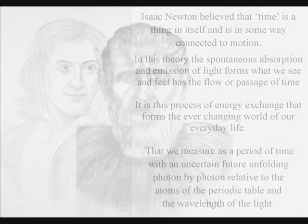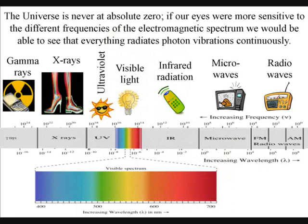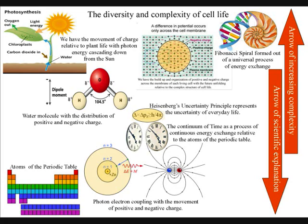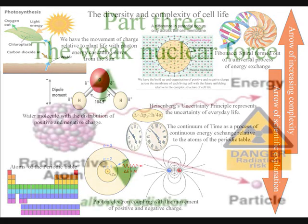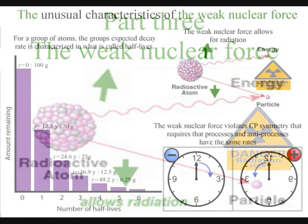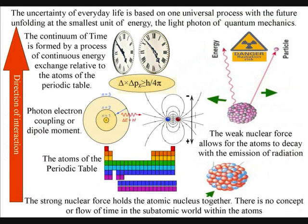In ancient Greece, it was believed that the atoms were indestructible, but now we know this is not so. Atoms that decay, with an unstable atomic nucleus emitting radiation, could represent a problem for a theory that says that the future is unfolding photon by photon relative to the atoms of the periodic table. But the weak nuclear force explains radioactive decay with some very unusual characteristics that can only really be understood as part of a logical process if what we see and feel as the continuum of time is formed by photon-electron interactions.